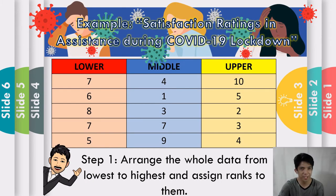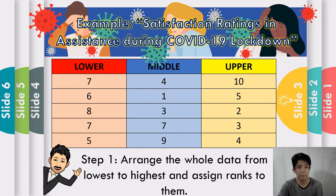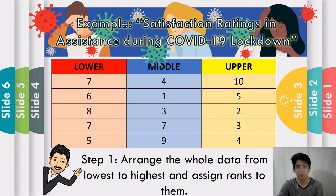In order for us to perform a Kruskal-Wallis test, let's have this example. The title of the research is: 'Satisfaction ratings in assistance to COVID-19 lockdown.' We have three groups of people: the lower class, the middle class, and the upper class. I assigned colors for each group — red for lower class, blue for middle class, and yellow for upper class. Three groups of participants rate their satisfaction in assistance during COVID-19 lockdown. The rating scale is from 1 to 10, with 1 being the lowest and 10 being the highest.